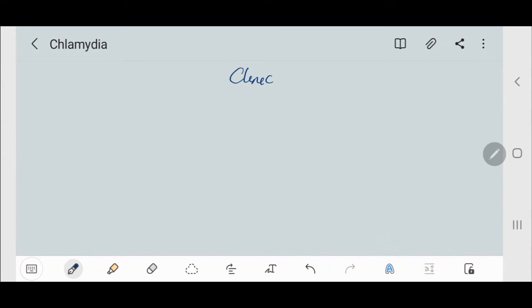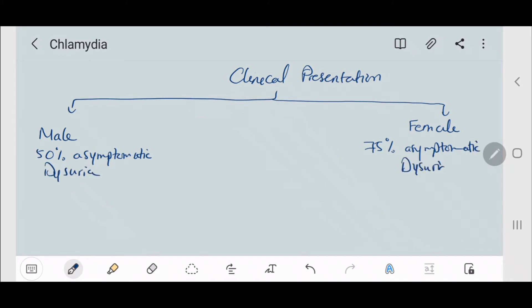As for the clinical presentations, it differs from males to females. In males 50% are asymptomatic, while in females 75% are asymptomatic. Dysuria could be present in both. Urethral discharge in males, vaginal discharge in females.